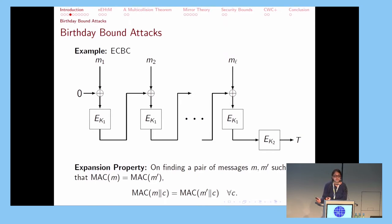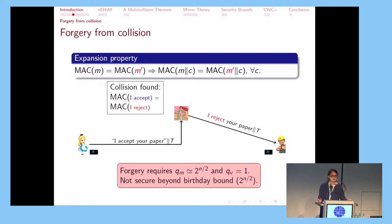We can see an example of such a forgery on a birthday bound secure MAC here. So we have ECBC as an example. This MAC has the expansion property: if the tags for two messages collide, then the tags for any other two messages which have the previous two messages as prefixes will also collide. Eve can use this property of ECBC and make a successful forgery. If she finds that the tag for the messages "I accept" and "I reject" are the same, then she can add the phrase "your paper" to her message and carry out a successful forgery. Such collisions can be found with high probability within the birthday bound, so approximately 2^(n/2) queries for an n-bit message.